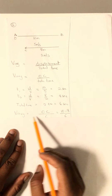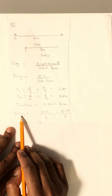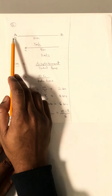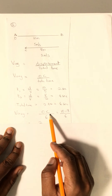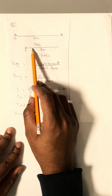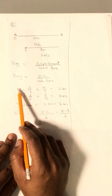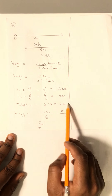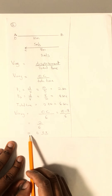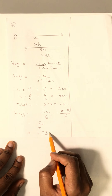For us to calculate the average velocity, which equals the displacement from zero to the final point C: the displacement equals 10 meters minus 8 meters, which equals 2 meters, over the total time of 6 seconds. This gives us an average velocity of 0.33 meters per second.